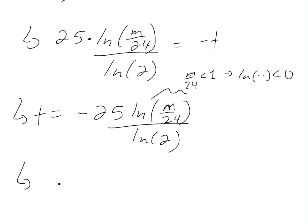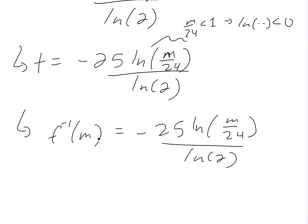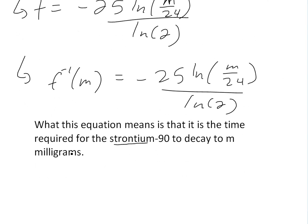So f inverse of m equals -25 times ln(m/24) divided by ln(2). If we interpret this equation, it means that it is the time required for the Strontium-90 to decay to m milligrams. So if we want to know the time required to decay to, let's say, 5 milligrams, like in the example from my earlier video, let's plug that in.